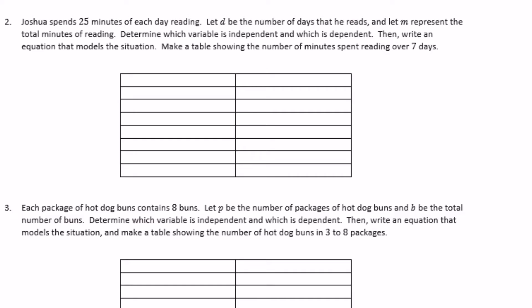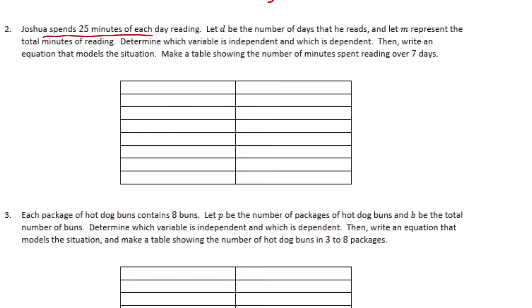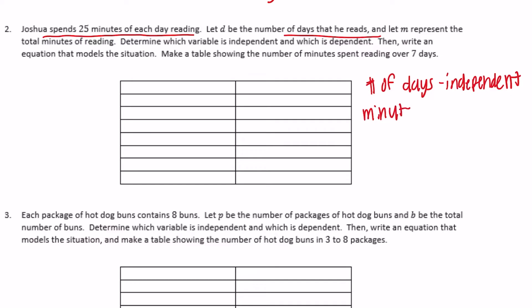Five months times three is fifteen houses. Number two: Joshua spends 25 minutes each day reading. Let d be the number of days that he reads and m represent the total number of minutes of reading. Determine which variable is independent and which is dependent. The total number of minutes spent reading is the dependent variable because it depends on the number of days he reads. Number of days is the independent variable and minutes reading is the dependent variable.